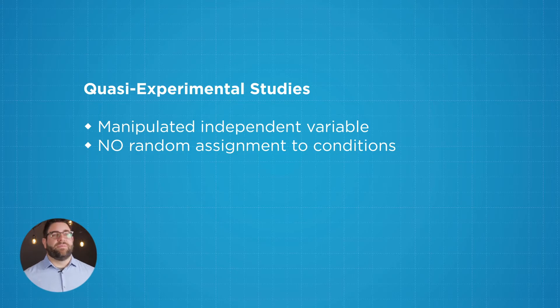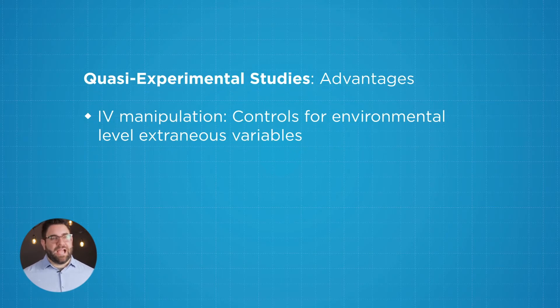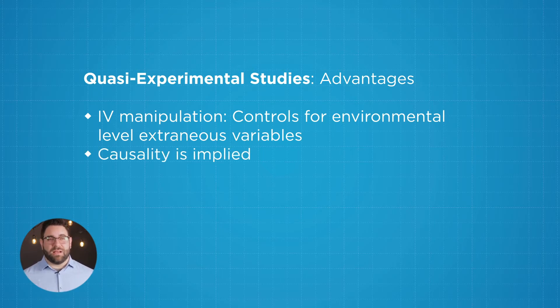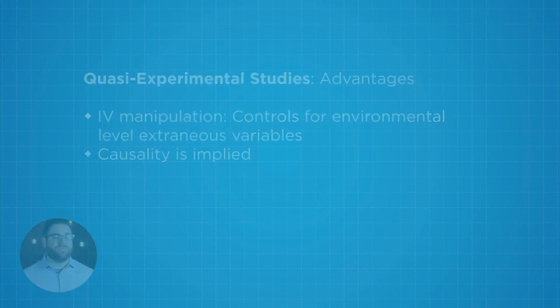However, there is no random assignment to conditions. Some of the benefits of using a quasi-experimental design is that we are still manipulating that independent variable. By doing this, we can imply that there's actual causality to the relationship we're looking at — we can determine if this is a real relationship. It also helps us to control for some of those environmental factors that might be an issue. This is a very good form of research, however it does come with a few disadvantages.